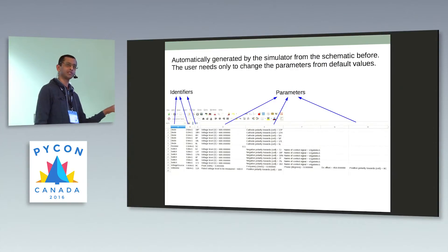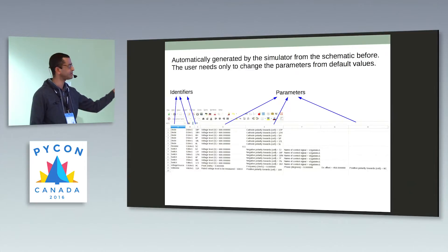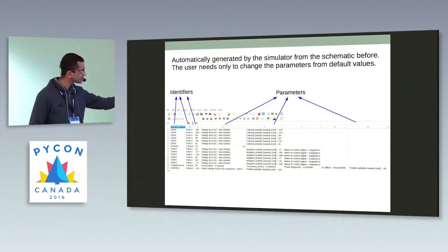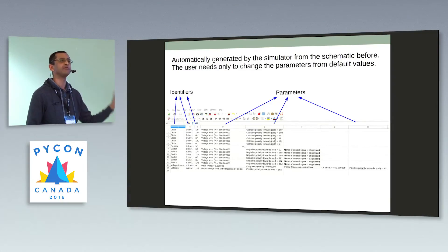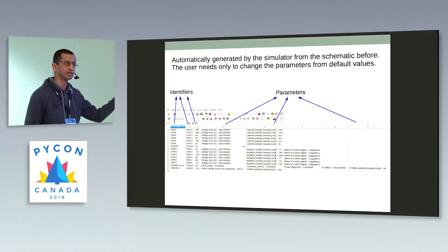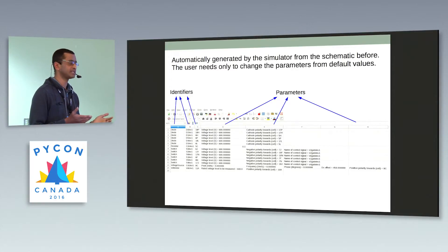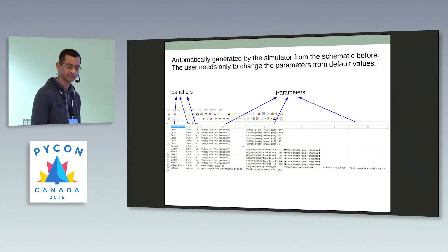Once you enter this circuit schematic, the simulator automatically detects each and every circuit component and creates a parameter spreadsheet. It puts up all the components along with identifiers, the name, the position, and default parameters. All the user has to do is change the default parameters to what they want and save it back. These parameters keep changing because I keep adding newer elements, but typically you just need to remember that when you change a circuit, you may have to re-update some of these spreadsheets.